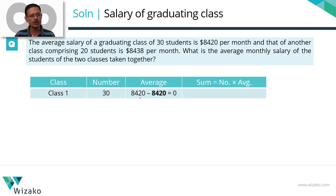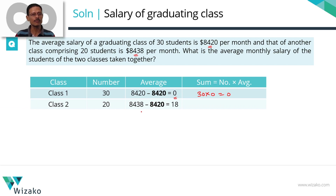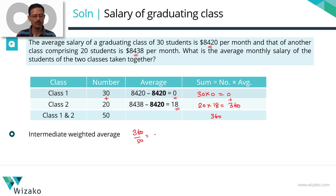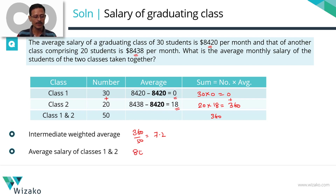First class: 30 students, average is 8420 — the lower of the two numbers. Subtracting 8420 from it results in zero. So sum equals 30 × 0 = 0. Class 2: 20 students, subtracting 8420 from 8438 gives an average of 18. Their sum equals 20 × 18 = 360. Total 50 students combined: sum of salaries is 0 + 360 = 360. The intermediate average is 360 ÷ 50 = 7.2. The final average is 8420 + 7.2 = 8427.2.